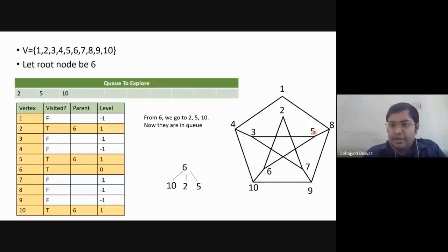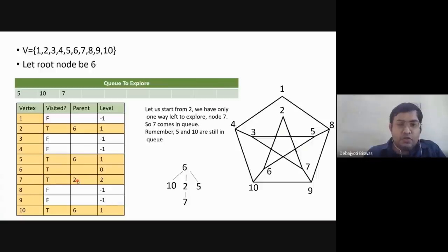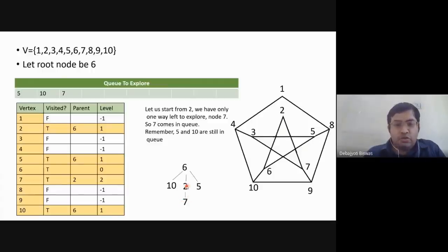From two we can only go to seven, so seven is visited: parent is two, level is two. So six is level zero, two and five and ten are level one, seven is level two. Five and ten are still in the queue along with seven. From five we can go to three and eight — both are visited with parent five and level two.